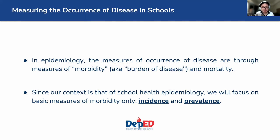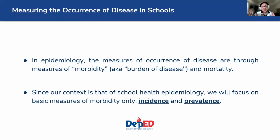In epidemiology, the measures of occurrence of disease are through what we call measures of morbidity and mortality. But since our setting is a school and not the general population or a hospital, we will just talk about morbidity and not mortality. The basic measures of morbidity, or of disease, are incidence and prevalence. We will focus on those two key concepts for this module.